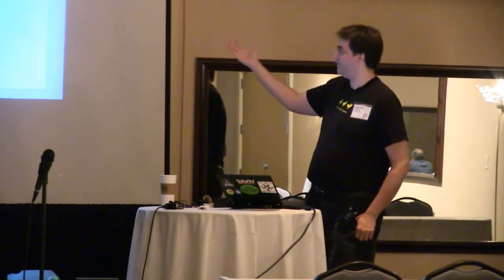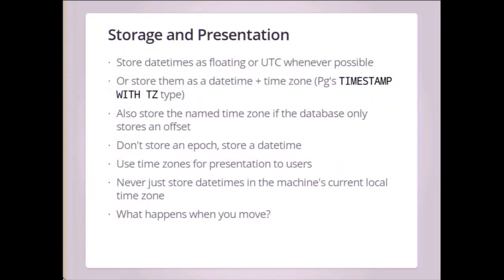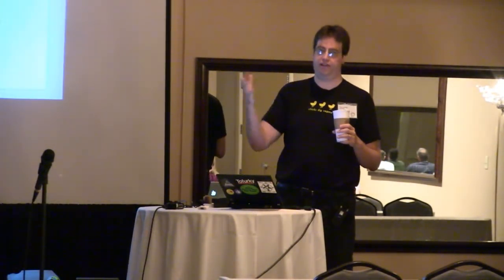When there's an ambiguous local time, DateTime picks the latest UTC time. For storage and presentation: whenever possible, store either a floating DateTime or store the DateTime in UTC. You can also store them as a datetime-plus-timezone if that's a type in your database. However, that's still not perfect — Postgres stores the time zone just as an offset, not the Olson name. There are plenty of time zones that are minus five hours. Both America/New_York and America/Chicago can be minus five hours from UTC at different times of the year. So if you need to store the local time zone, you also have to store that name.